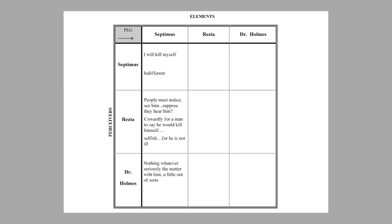Looking at the third column, we can see how the characters see Dr. Holmes. Rezia says, 'He told me to make your husband take an interest in things outside himself.' That reads as something of a professional version of 'pull yourself together.' But she likes him and says, 'What a kind man, what a good man he is.' That's rather interesting. By contrast, when they later go to see the psychiatrist Dr. Bradshaw, Rezia says a very different thing: 'A very unkind man, not a nice man.' She's rating her professional advisors very much on their personality — whether they're nice or not — which is a very important and particular kind of construct.